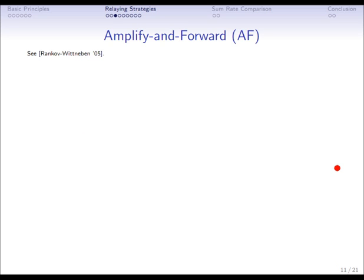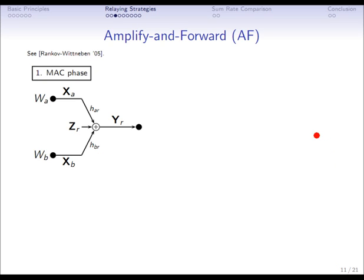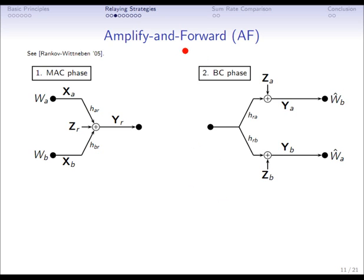The first strategy is called Amplify and Forward. Just to get acquainted with the block diagrams, here I'm just reordering the nodes a little bit. These are the two users. This is the relay. Now I'm switching to vector notation. Basically, this is now the whole uplink. So these vectors are dimension n half, so they now contain all the channel inputs of the two users. They get linearly superimposed at the relay plus the noise and then received by the relay.